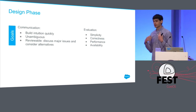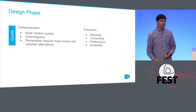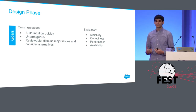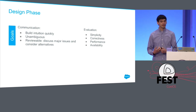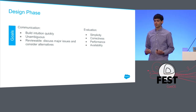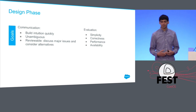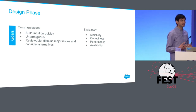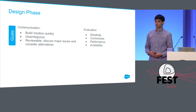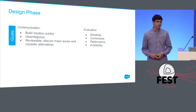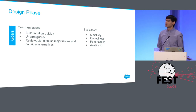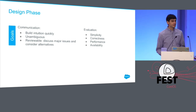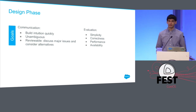If we're going to have a real design phase, these are the goals we should have. Communication and evaluation: we want other people to build intuition quickly about the design. We want to communicate about it unambiguously and precisely, and we want this to be reviewable. On the evaluation side, we want designs to be as simple as possible — that's the only way we can possibly get them right. Correctness, performance, availability, and scalability are all things we should evaluate well before writing production code.